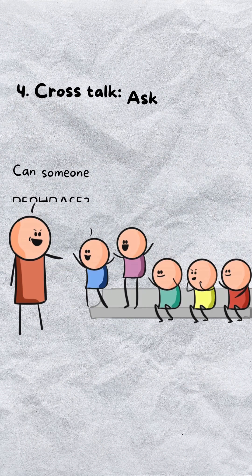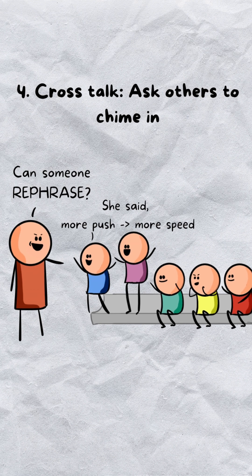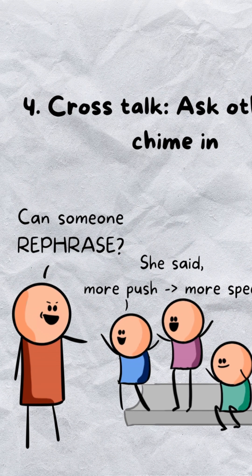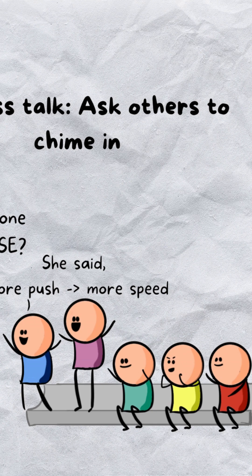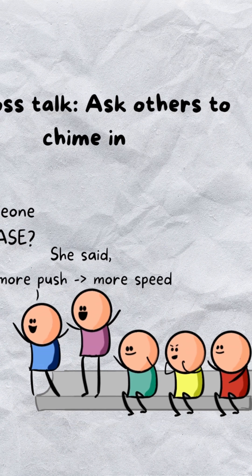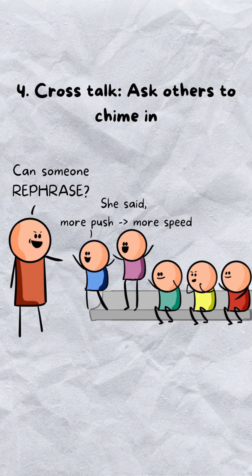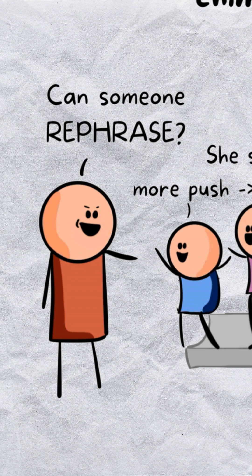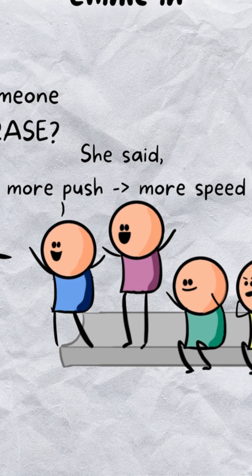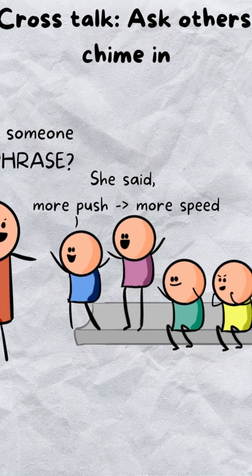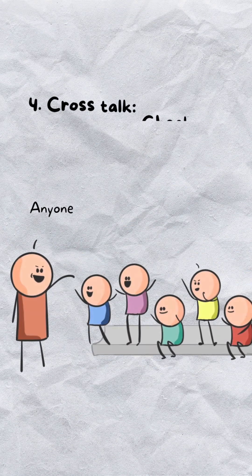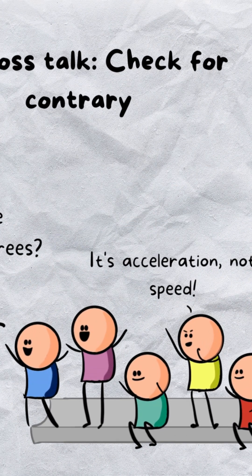Fourth, one of the most powerful things you can do is have cross-talk. Ask other people to chime in. There are many different things you can do. Here are a few examples. Can someone rephrase what she said? Yeah, she said more push gives more speed. You can also ask if somebody has a contrary opinion.